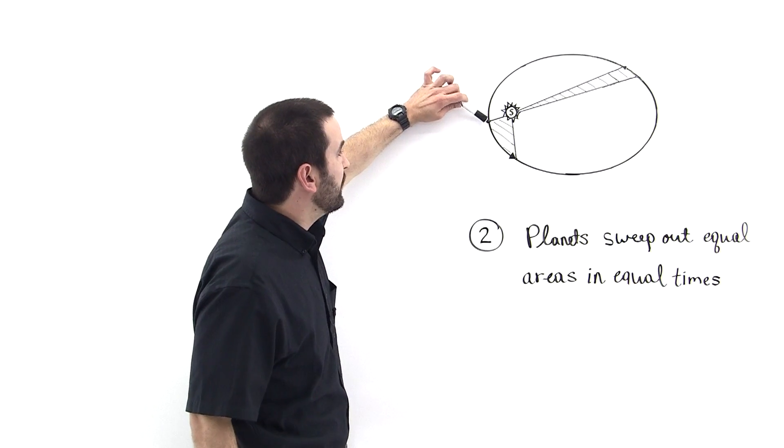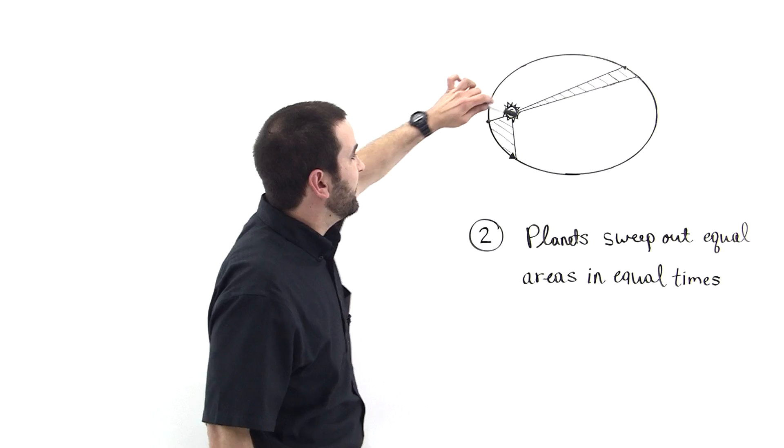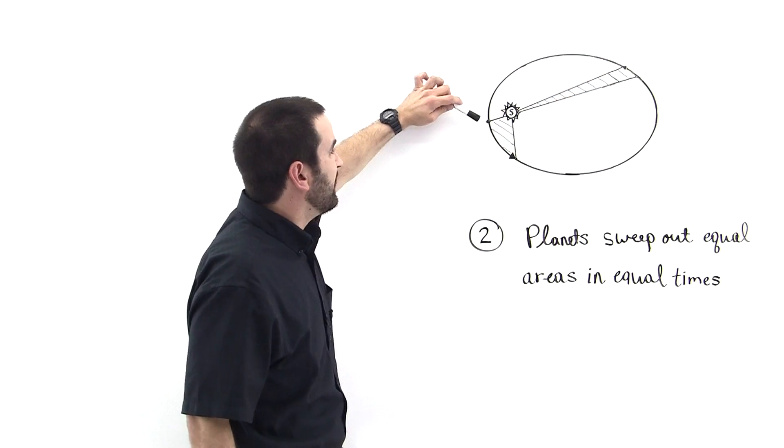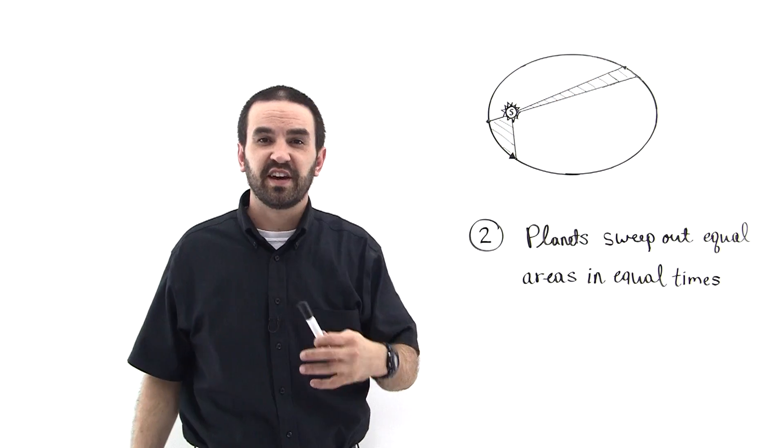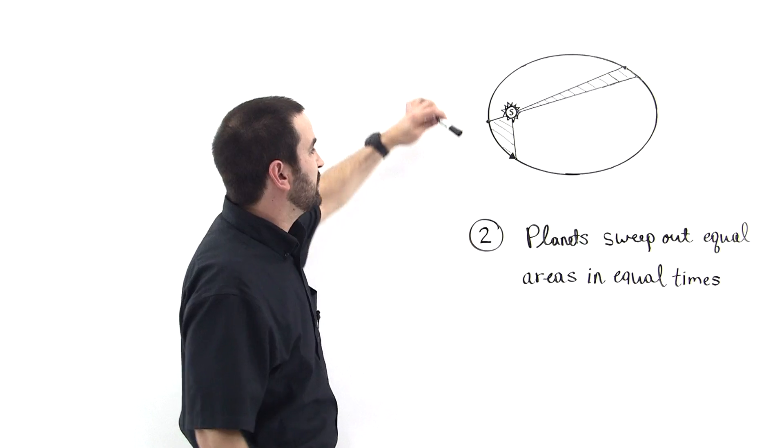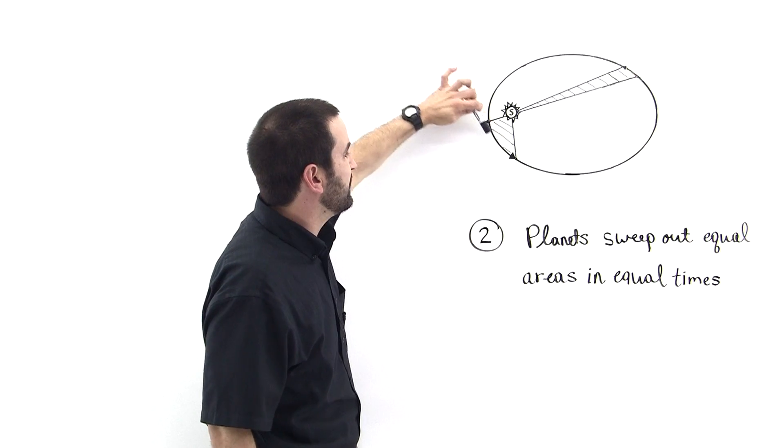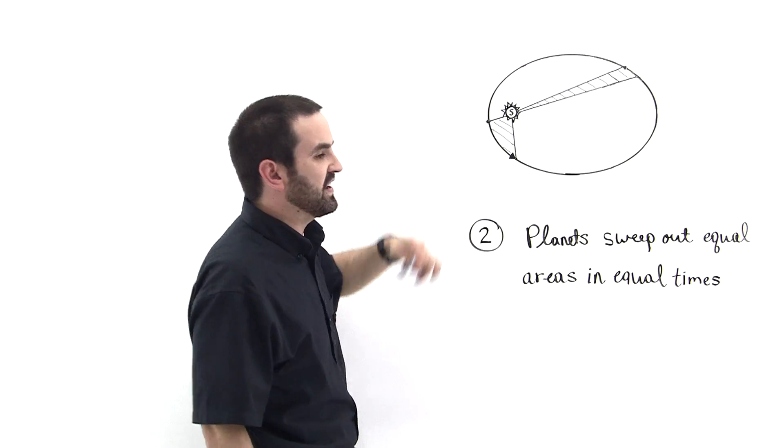If we have this planet here closer to the sun than it is when it's over here, because it's closer the force due to the sun is going to be greater and so it's going to be moving with a faster velocity right here, a faster speed.